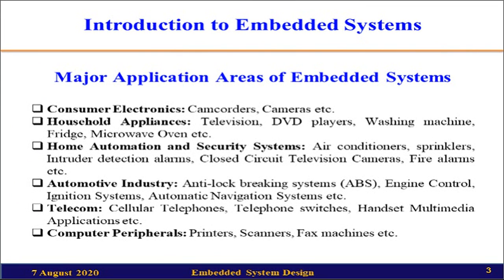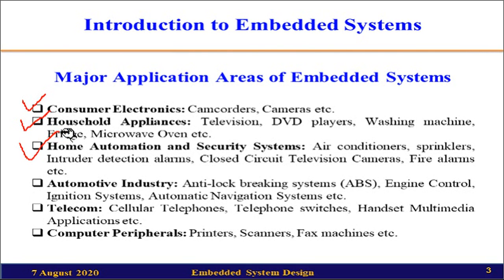The first topic is the major application areas of embedded systems. There can be many areas where we can use embedded systems, listed here under different categories. The first category is consumer electronics — camcorders and cameras. In household appliances we can see televisions, DVD players, washing machines, fridges, and microwave ovens. In home automation and security systems we find air conditioners, sprinklers, auto-detection alarms, closed-circuit TV cameras, and fire alarms.